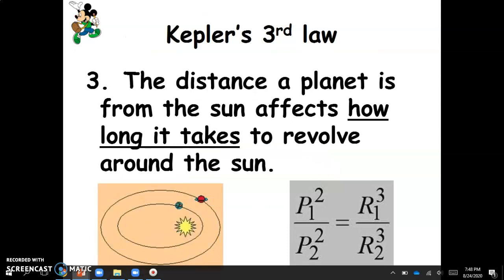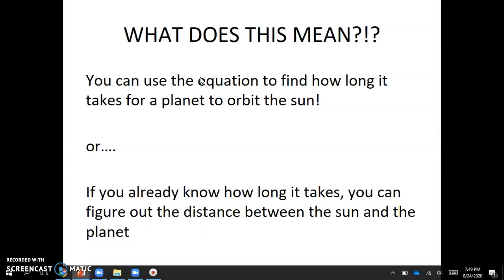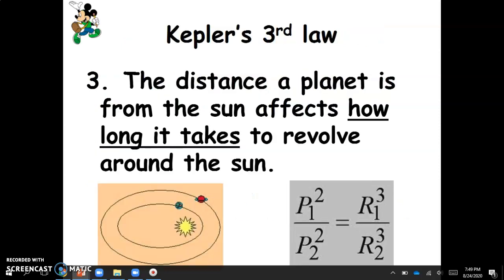And Kepler's third law has to do with math. I don't want you to worry about the math. What I want you to know is that Kepler's third law states that the distance a planet is from the sun will affect how long it takes to revolve around the sun, which makes sense. So this is a ratio equation. You can use ratios to help determine this. So obviously, the further a planet is from the sun, the longer it's going to take for it to actually make that revolution around. So all you need to know for this is that the distance a planet is from the sun will affect how long it takes to revolve around the sun. So what does this mean? It means if we were doing the math or you were in an upper level physics course, you could use the equation to find out how long it takes for the planet to orbit the sun. Or if you knew how long it took a planet to orbit the sun, you could reversely use that equation to figure out the distance that the planet was from the sun.